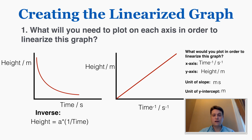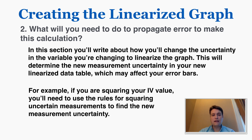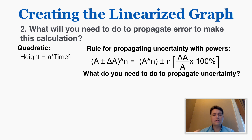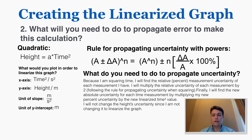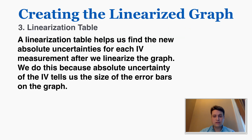Section two asks you to describe what you need to do to propagate error to make this calculation. You're going to write in words what you need to do to each of your measurements and each measurement's error to figure out the new error of each new linearized measurement. For a quadratic function — height equals a times time squared — because I'm squaring time, I'd find the relative percent uncertainty of each time measurement, multiply the relative uncertainty by two (following the rules for propagating uncertainty with powers), and then use that new percent uncertainty to find the new absolute uncertainty.